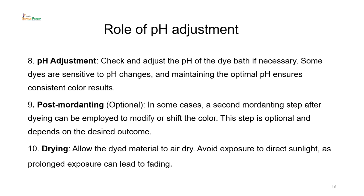pH adjustment: check and adjust the pH of the dye bath if necessary. Some dyes are sensitive to pH changes, and maintaining the optimal pH ensures consistent color results. For example, the bath is made acidic by adding vinegar — which is dilute acetic acid — when silk or wool is added, altering the pH very mildly. Nevertheless, this is required for amide-link fabrics such as silk and nylon.